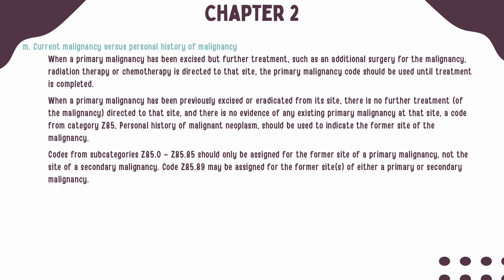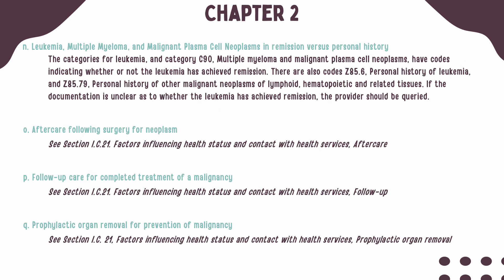Codes Z85.0 through Z85.85 should be assigned only for histories of primary malignancies. Z85.89 is appropriate for a history of either a primary or secondary malignancy. When coding for leukemia, category C90 has codes indicating whether the leukemia has achieved remission or not. For a personal history of leukemia or lymphoid tissue, you will use code Z85.6 or Z85.79. If there is any confusion on whether the leukemia has achieved remission, you should query your provider for clarification.